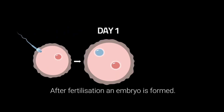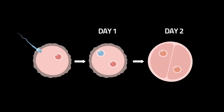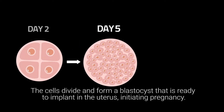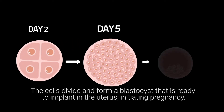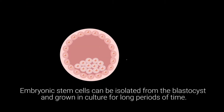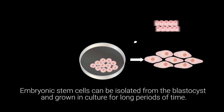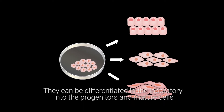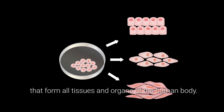After fertilization, an embryo is formed. The cells divide and form a blastocyst that is ready to implant in the uterus, initiating pregnancy. Embryonic stem cells can be isolated from the blastocyst and grown in culture for long periods of time. They can be differentiated in the laboratory into the progenitors and mature cells that form all tissues and organs of the human body.